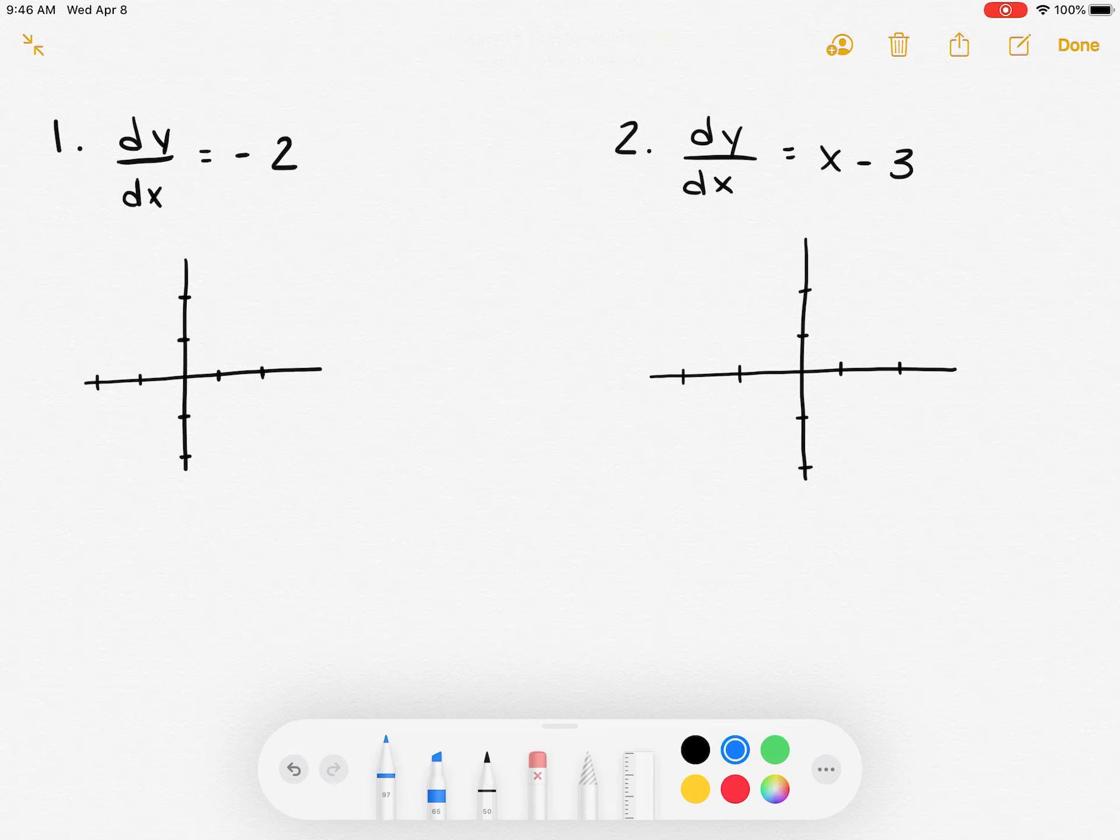So the first thing I would do is I would look at equation number 1, because it makes sense to start with number 1, and I would see that it says dy/dx equals negative 2. So in order for me to figure out what that graph looks like, I'm going to start by plugging in the point (0,0). That's always my first point that I like to plug in, because both numbers are 0.